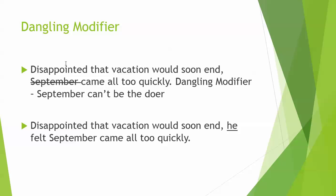The next one: 'Disappointed that vacation would soon end, September came too quickly.' It sounds like September is a person, but they actually mean the month. September cannot be the doer of the action, so it's a dangling modifier. Instead: 'Disappointed that vacation would soon end, he felt September came too quickly.' He is the doer of the action — his vacation was ending and he felt September came too quickly.